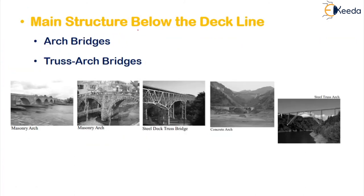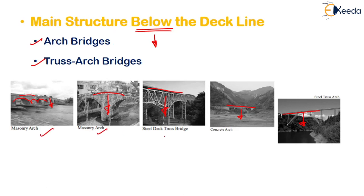When the main structure is below the deck line, the best examples are arch bridges and truss arch bridges. In all these bridges, the main structure will be below the deck line. If you observe, this is your deck line, and you can see the main structure is below your road level. Examples include masonry arches, steel deck truss bridge, concrete arch, and steel truss arch.